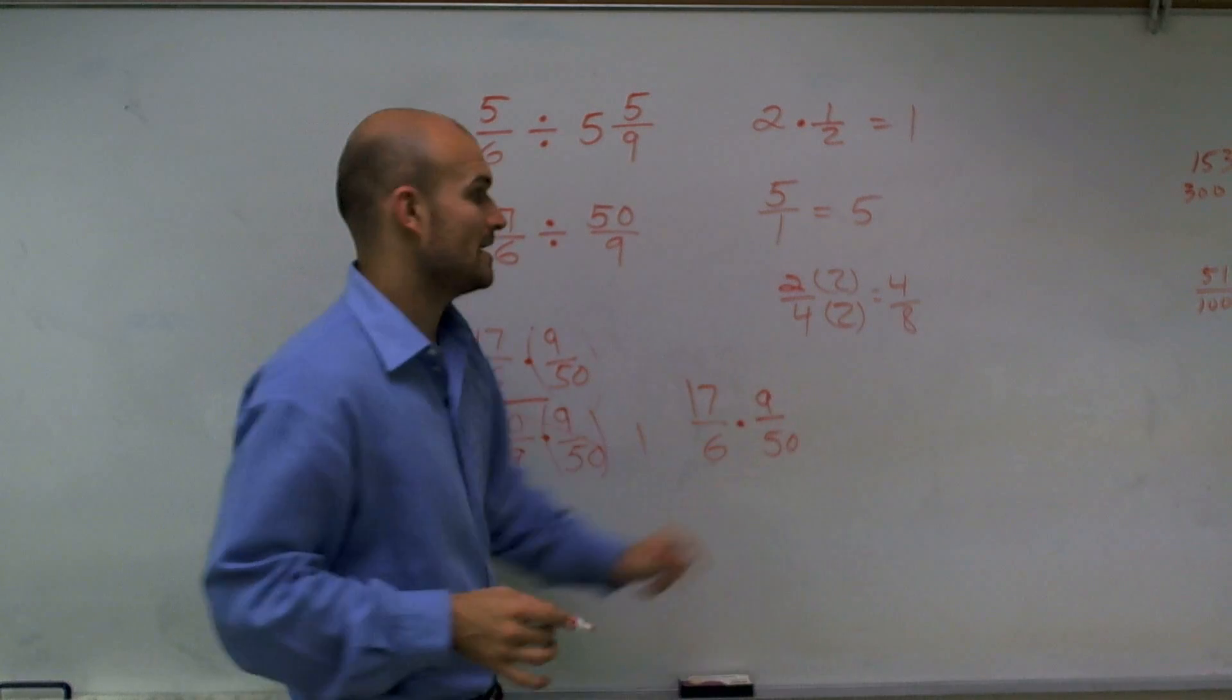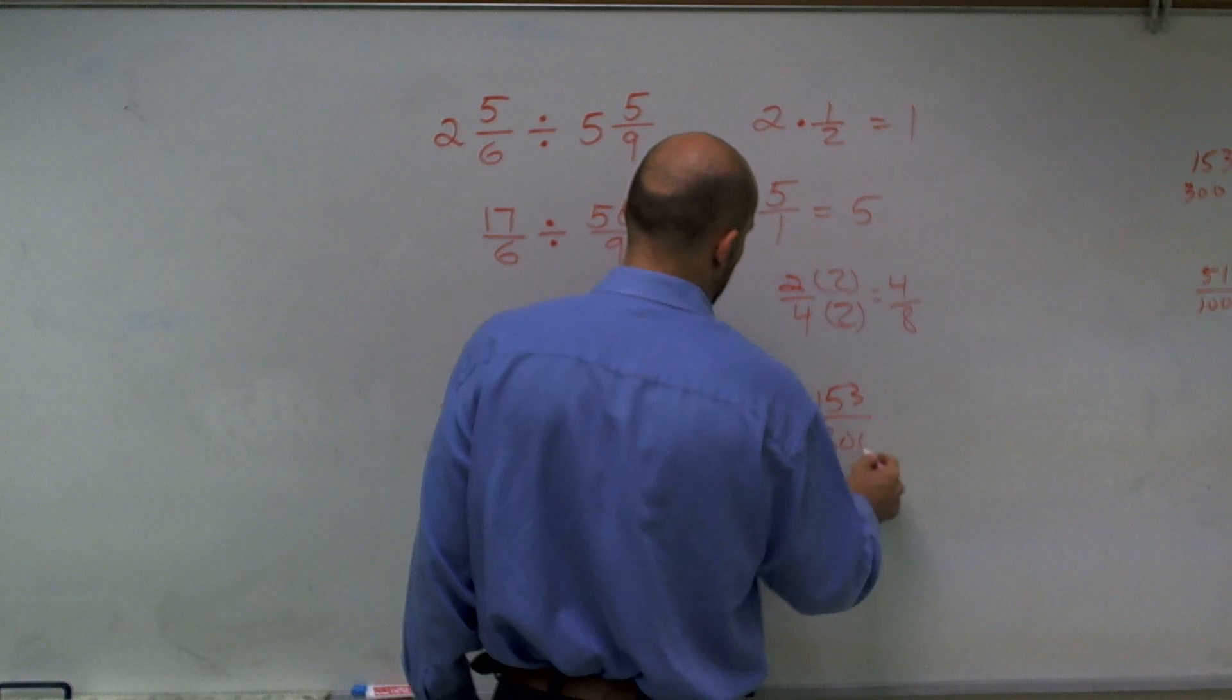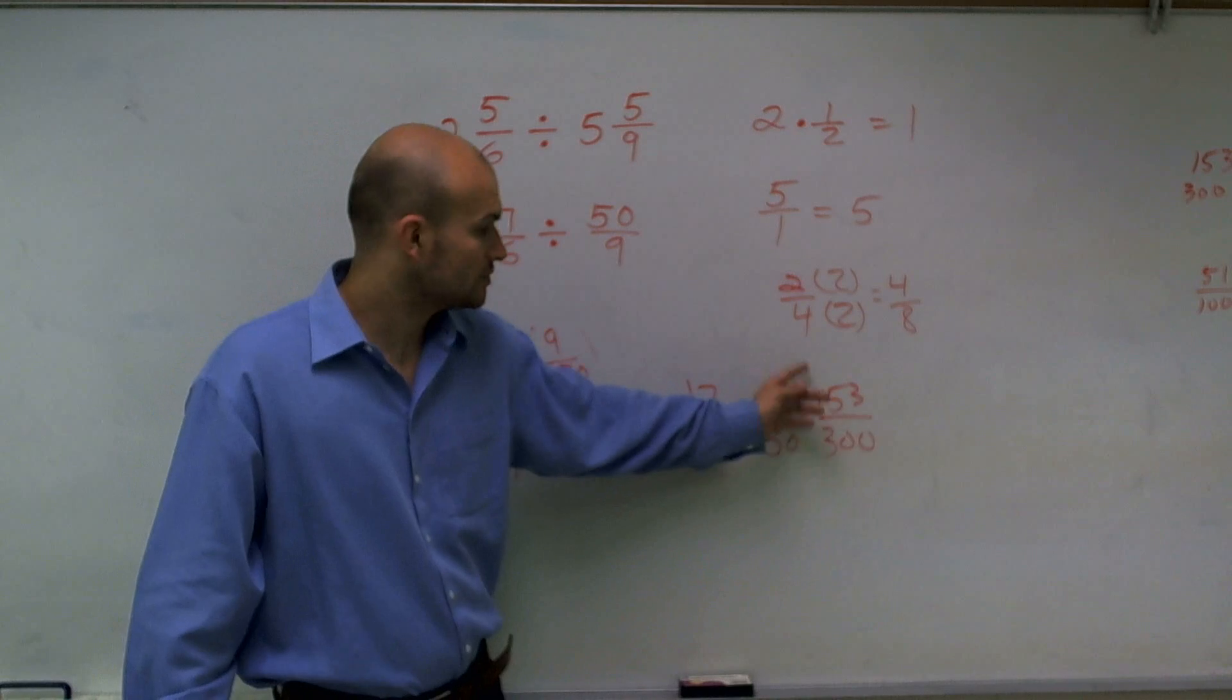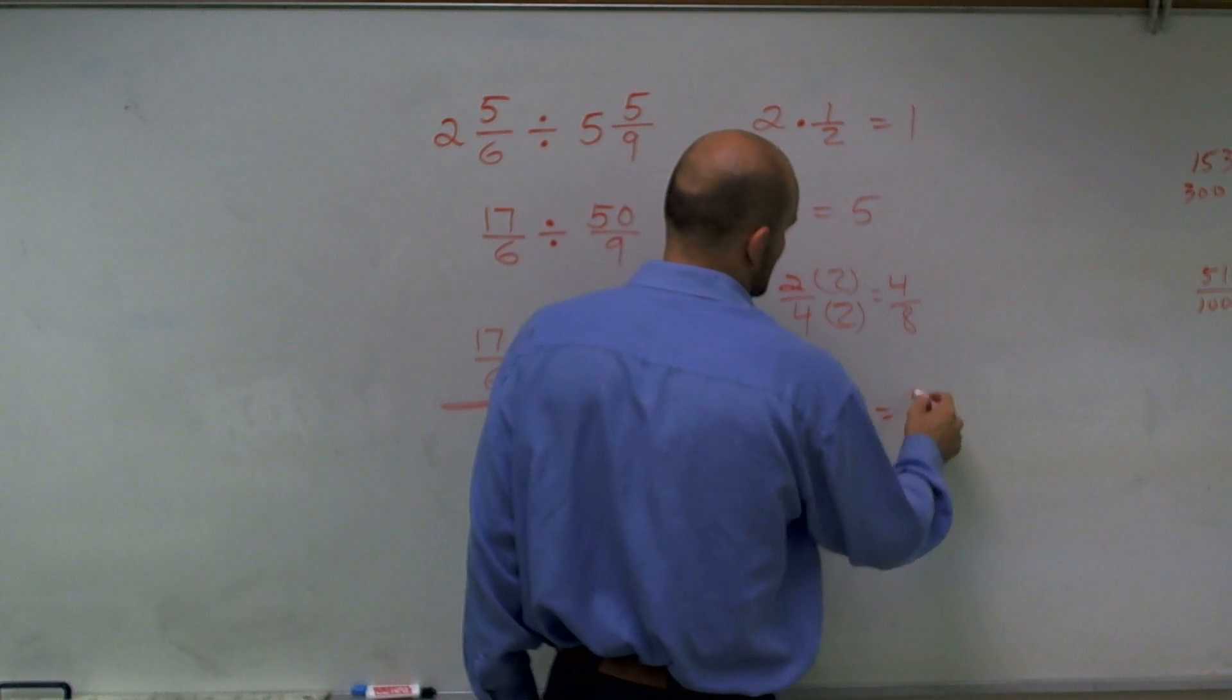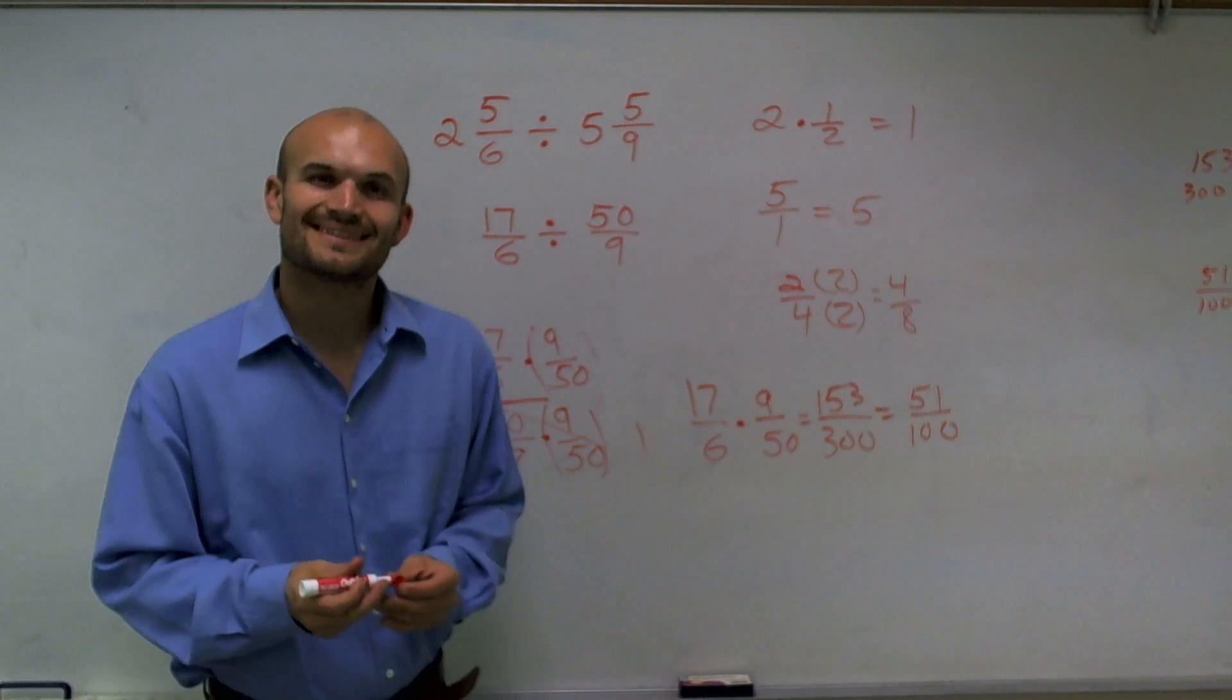Now I just multiply across. I get 153/300. And then I notice 3 goes evenly into both of those terms. So I can reduce this down to 51/100. And that is your answer. Thank you.